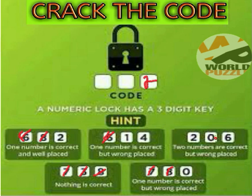From the second clue, six is cut and two is confirmed as correct. According to the first clue, two numbers are correct but in the wrong place. Here we can see that two is the right number but is in the wrong place in this clue, so we continue analyzing.